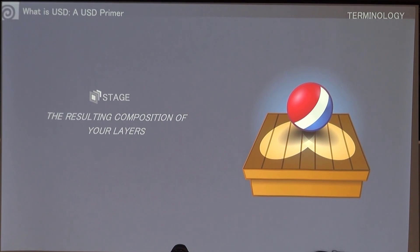We're also going to talk about stage. When you're in Houdini and you're in Solaris, you go into the LOPs context, you're in the stage. The stage is simply where you compose all of these USD layers together to make a completed composition.